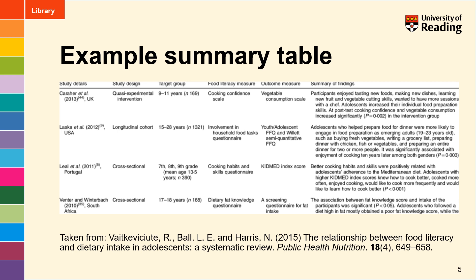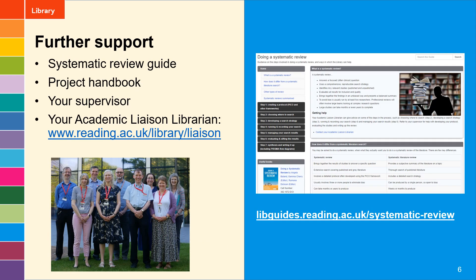This is an example of a summary table taken from a published article for a systematic review. You can see the way they've picked out key bits of information they wanted to analyze: the study details including authors, year, and where the study took place; the study design; the target group. This study was looking at food literacy, so they included what measure was used to judge food literacy and the outcome measure, as well as a key summary of the findings from each paper. It's a good way to pick out what's important about each of the studies you're including in your review.